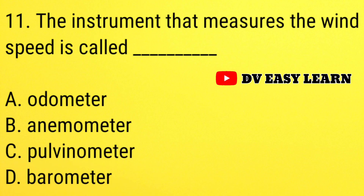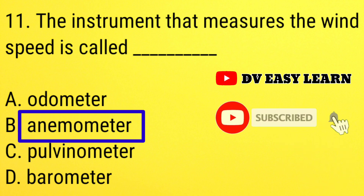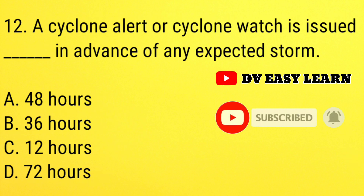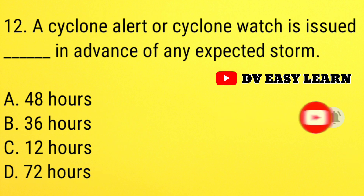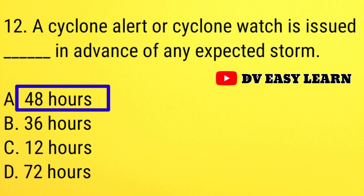Question number 11: the instrument that measures the wind speed is called — correct answer: anemometer. Question number 12: a cyclone alert or cyclone watch is issued dash in advance of expected storm. Correct answer: 48 hours.